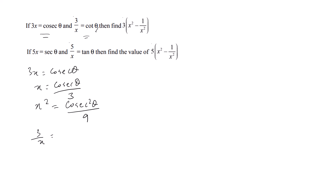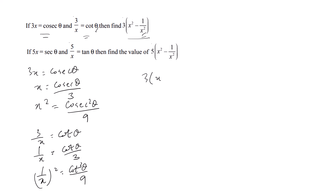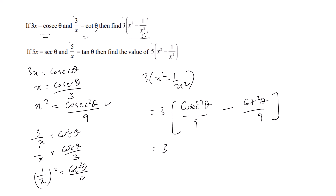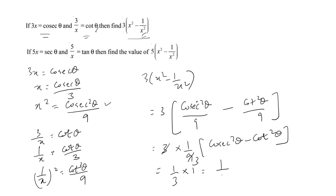From the second expression, 3/x = cosθ, so 1/x = cosθ/3. Squaring both sides gives 1/x² = cos²θ/9. Now writing the expression: 3(x² - 1/x²) = 3 · (cos²θ/9 - cos²θ/9). Taking 1/9 outside the bracket: 3 · (1/9)(cos²θ - cos²θ) — wait, this simplifies to 3 · (1/9) · 1 = 1/3.